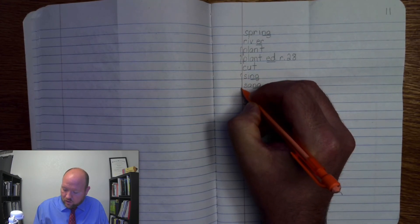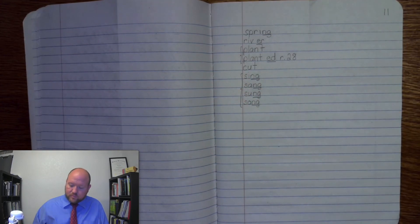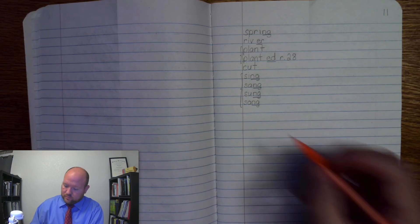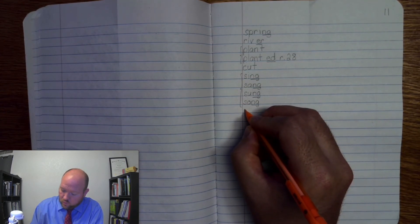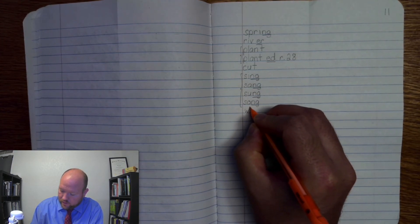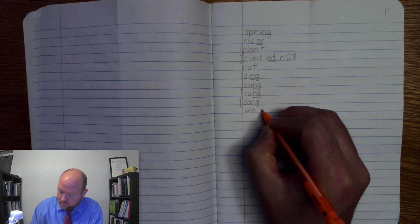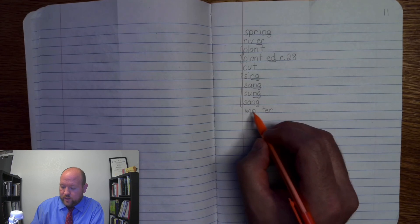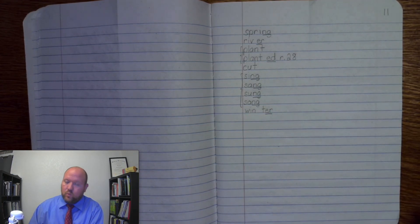And the last word is winter. Winter. And this would be like the season, okay? Winter, base word winter. W-I-N-T-E-R, winter. Winter, W-I-N-T-E-R, winter. Markings, winter. All right.